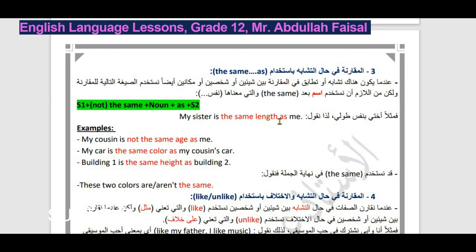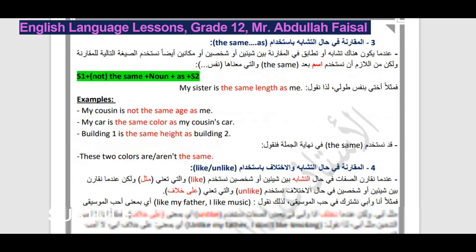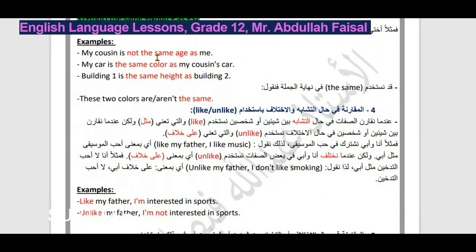أمثلة: My cousin is not the same age as me - لا نقول the same old. My car is the same color as my cousin's car - سيارتي بنفس لون سيارة ابن عمي. Building one is the same height as building two - المبنى رقم واحد بنفس ارتفاع المبنى رقم اثنين. إذن: the same + noun + as.